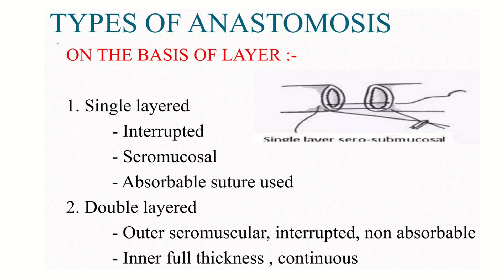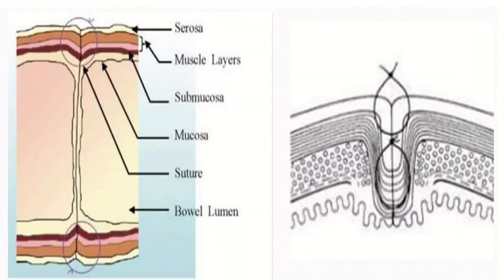On the basis of layer, anastomosis can be single layer or double layered. Single layer can be interrupted, seromucosal, using absorbable suture. The double layer can have an outer seromuscular interrupted layer using non-absorbable suture, and an inner full-thickness continuous suture layer.